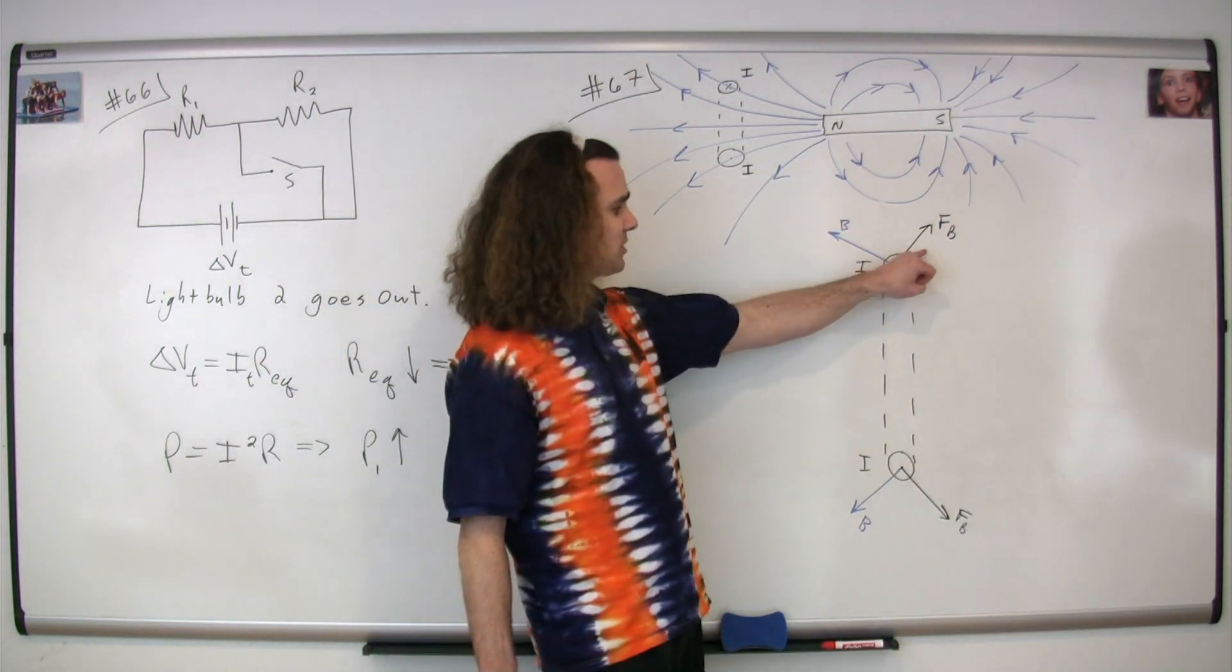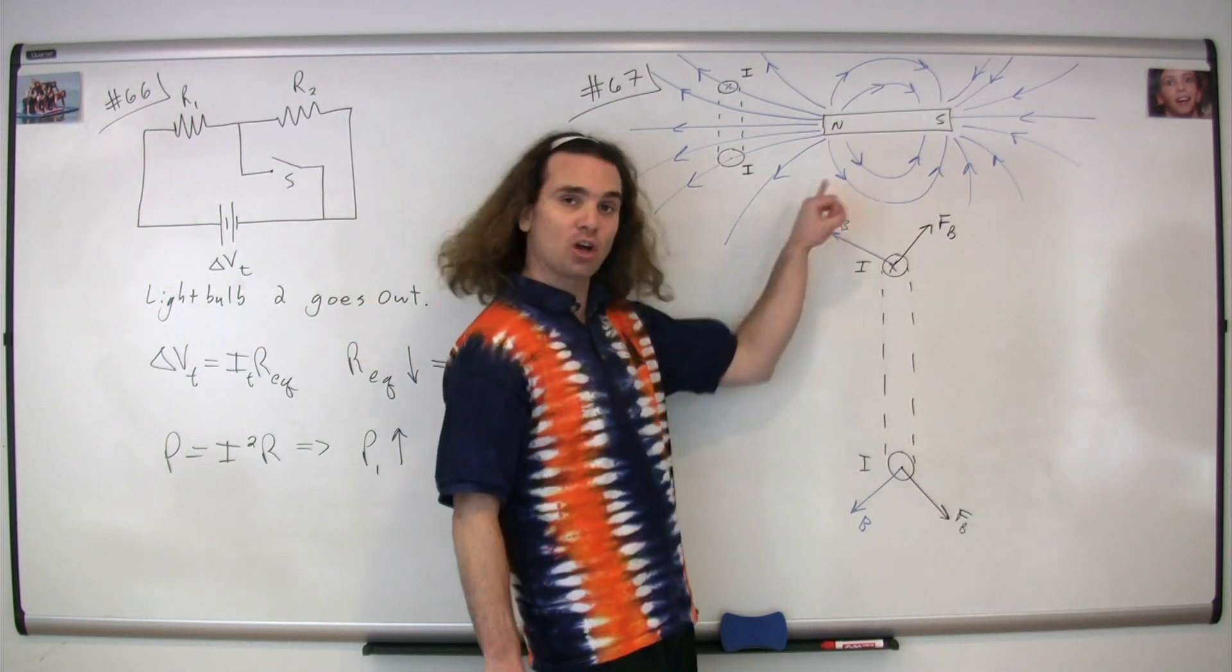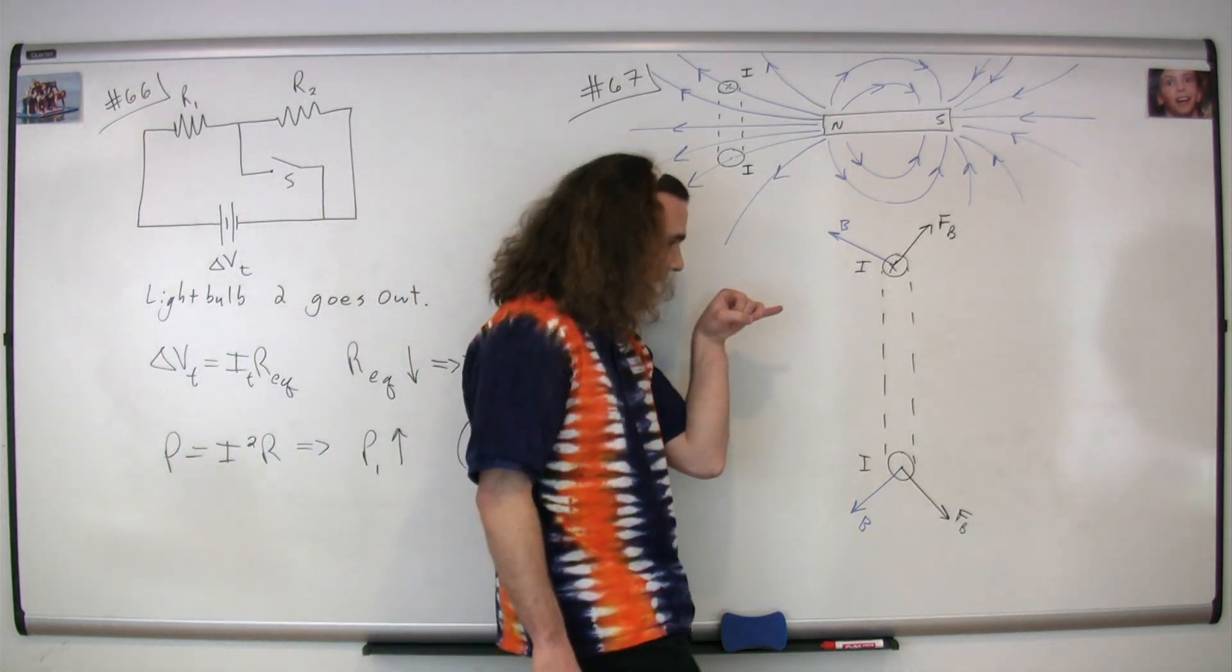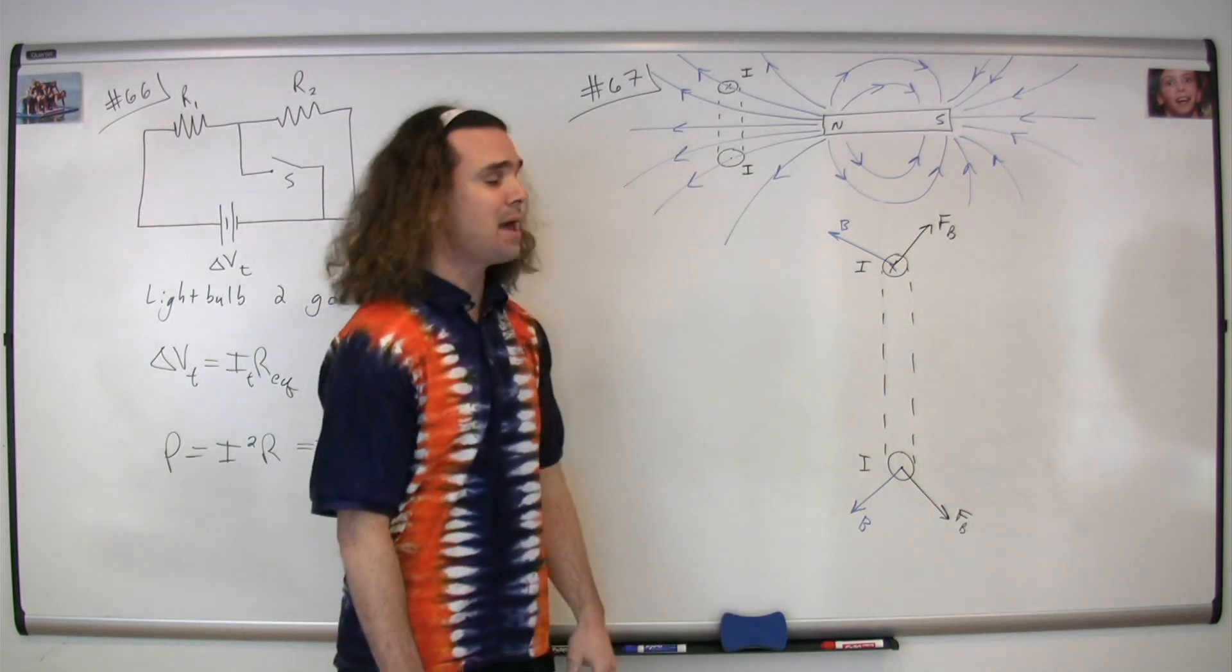So what you can see here is that the components of the magnetic forces in what I'm going to call the out direction cancel out. However, there is a net magnetic force to the right or toward the magnet.